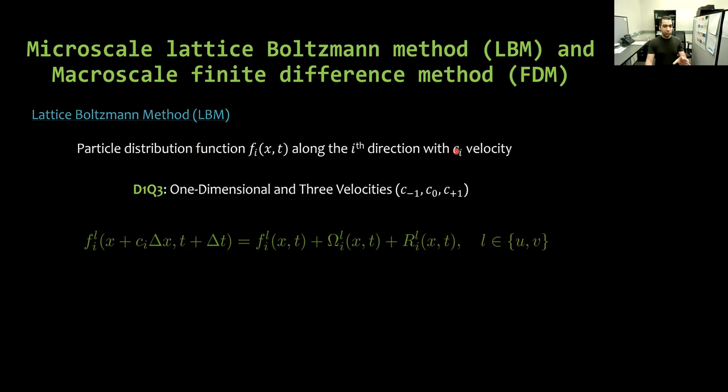For the reaction diffusion model we have here, we evolve F using this equation. We have one equation for U and one equation for V, L equal to U and L equal to V. Here, omega is the part responsible for the diffusion, and R is for the reaction. Finally, in order to obtain or reconstruct our observables U and V, we do this superposition.